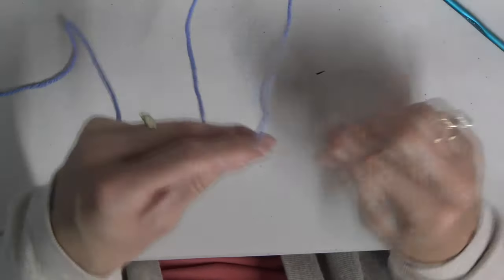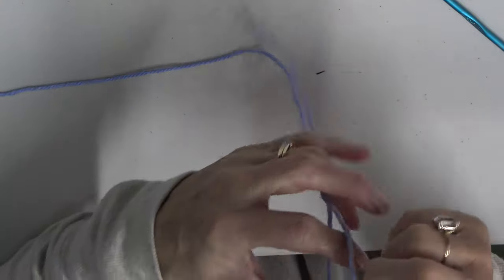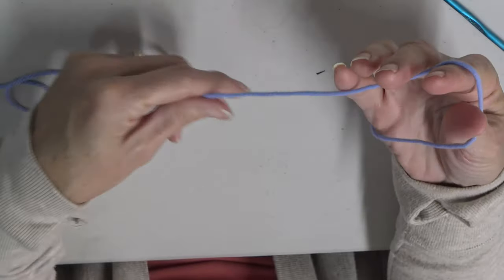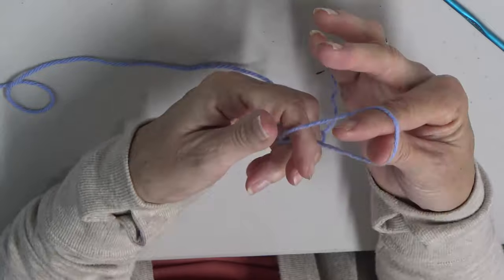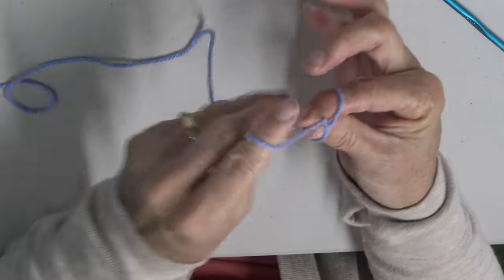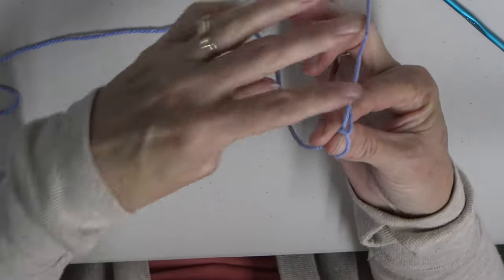But as always you need to start with a slip knot. So I just wrap the thread around my index finger and thumb and then I just turn it and twist it and draw up the crochet thread to make a slip knot.